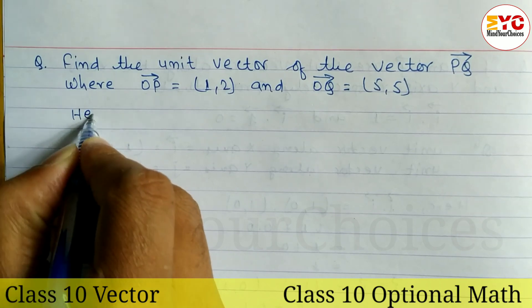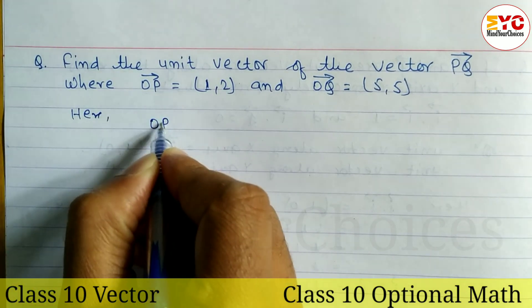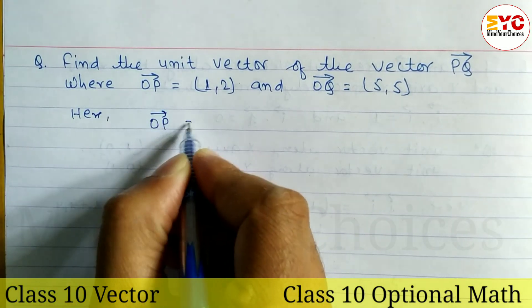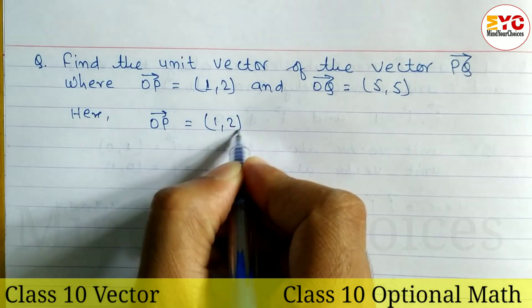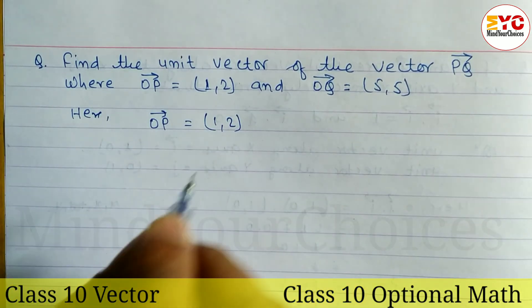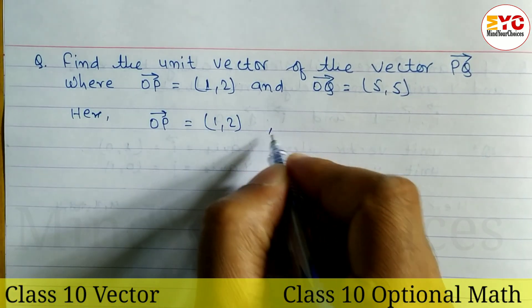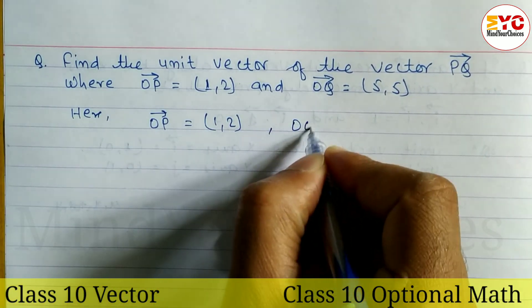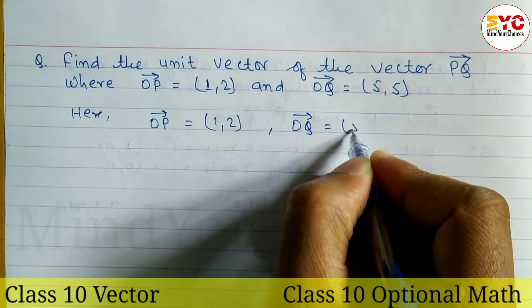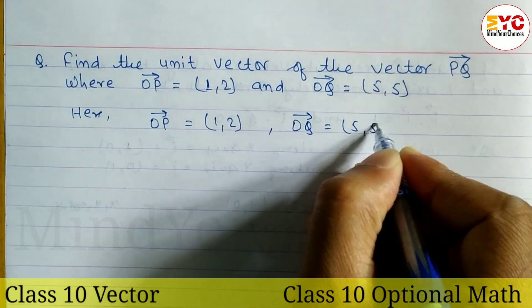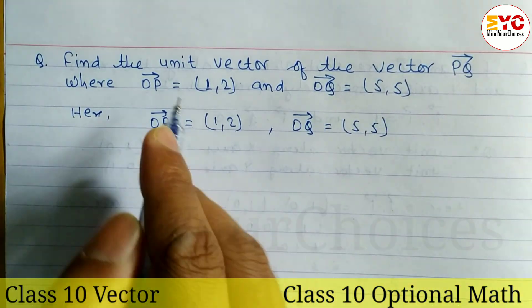What is the value of OP? OP is equal to (1, 2) in the form of coordinates. Similarly, OQ is equal to (5, 5).